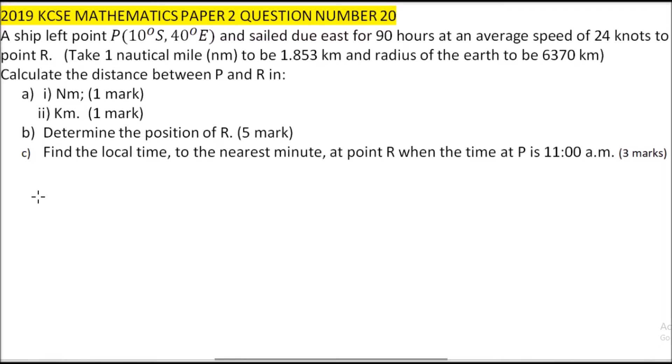Now, because we are given the number of hours and the speed in knots, we can get the distance. Distance equals speed times time, which equals 24 multiplied by 90 hours, which equals 2,160 nautical miles. So that is part A, roman numeral 1.